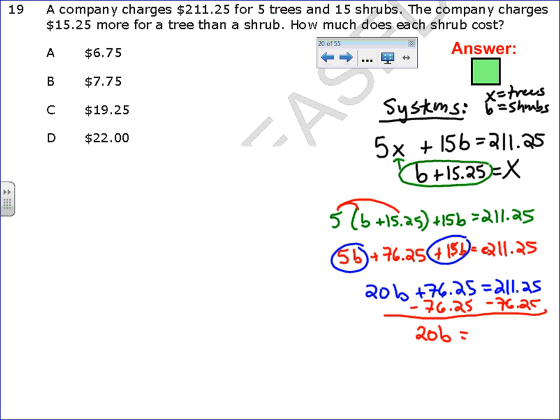So, 20B is equal to 135. I need to divide by 20, and B equals 6.75, and my answer is A.